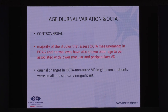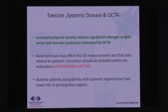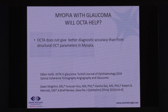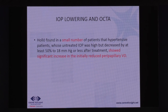However, there are controversies. The majority of studies assessing OCTA measurements in primary open-angle glaucoma show older age is associated with lower macular and peripapillary vessel densities — so a large normative database is needed, which is not currently available. Systemic diseases also affect OCTA measurements. In myopic glaucoma patients, the dilemma remains unresolved. Image artifacts affect peripapillary OCTA, and alterations are not disease-specific — vessel density decreases can occur in various diseases, not exclusively glaucoma. IOP lowering was found in only one study by Hollo, where a small number of patients treated with antihypertensive glaucoma drugs showed increased vessel density.